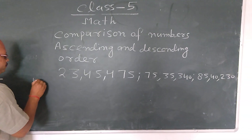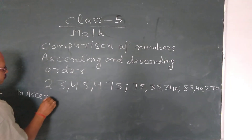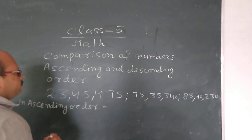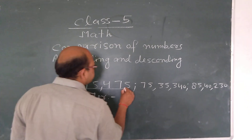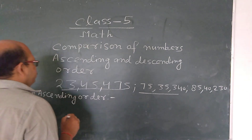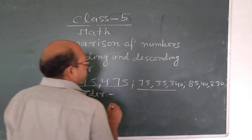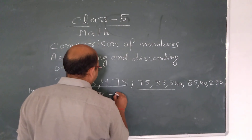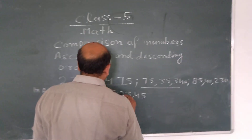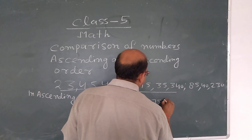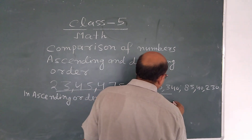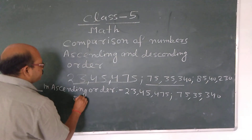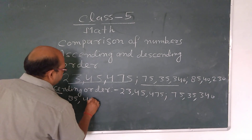In ascending order, first we find which number is smallest. In these numbers, 23 lakhs 45,475 is the smallest. Then 40,230. Then 75 lakhs 45,340. And last we write 75,000 and 40,230.